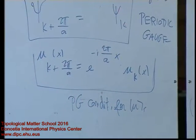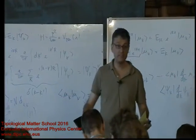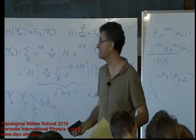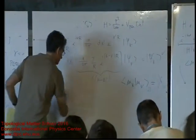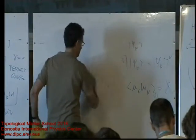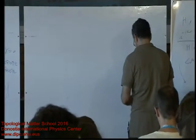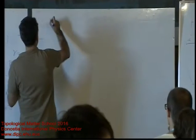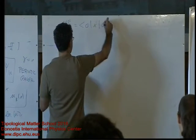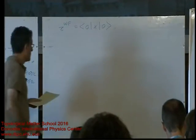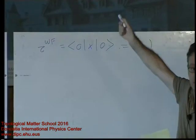Let's go back to the problem we really want to solve: we want to compute the polarization, or the electronic part of the polarization, which is given by the center of mass of a Wannier function. This was the internal coordinate inside the unit cell — in our revised bulk notation, it's the expectation value of x over the Wannier function in the central cell. What I want to do is rewrite this in terms of Bloch functions using the Wannier-Bloch transformation.